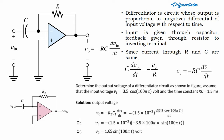A differentiator is a circuit whose output is proportional to the negative differential of the input voltage with respect to time. So the output voltage equation is: Vo equals minus RC into dVin by dt.